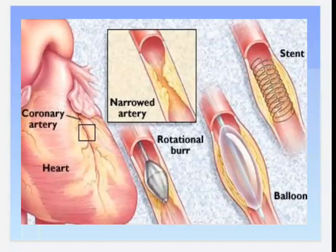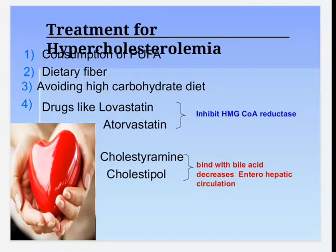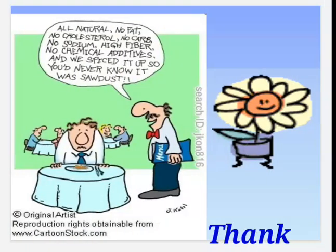Using balloon stenting and rotational burr methods, we can clear clotted blood vessels. Treatment for hypercholesterolemia includes: consumption of PUFA (polyunsaturated fatty acids), dietary fiber, avoiding high carbohydrate diets, and drugs such as lovastatin and atorvastatin, which inhibit HMG-CoA reductase. Cholestyramine and colestipol bind with bile acids and decrease enterohepatic circulation, thereby decreasing reabsorption of bile acids.